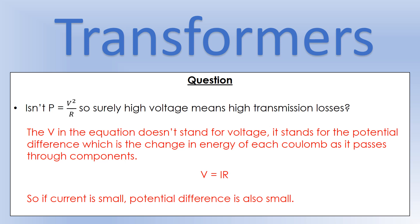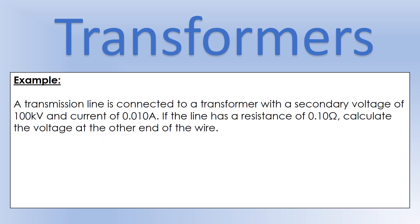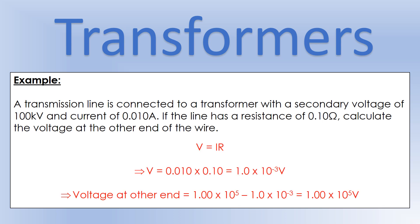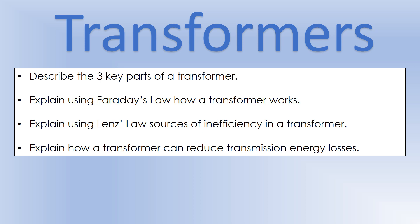Using standard values: a transmission line voltage of 100 kV, a current of 0.010 A, and a resistance of 0.10 Ω. Calculating the potential difference using V = IR gives 1 × 10⁻³ V. So the voltage at the other end of the wire is practically identical to the voltage at the start — the voltage change is tiny and very little energy is lost in the wire.